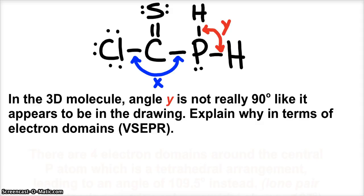And as this question says, in the 3D molecule, angle Y is not really 90 degrees like it appears to be in this drawing. Explain why in terms of electron domains, a.k.a. VSEPR theory.